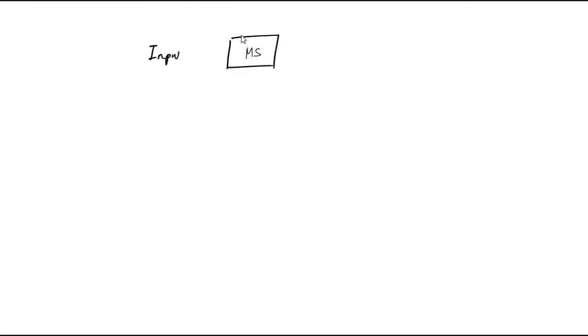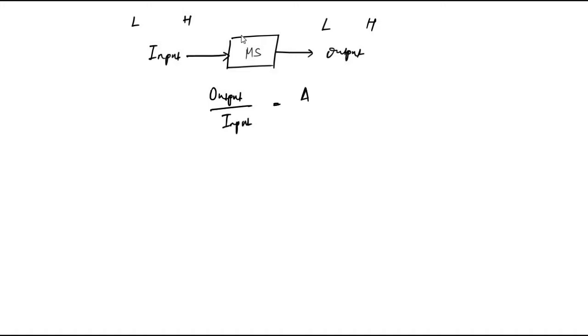So far we have discussed a lot of things related to the input-output relationship for a measurement system. We have a measurement system where we give an input to it and get an output. The output is specified between a low and high range, the input is specified between a low and high range. The output-by-input ratio gives us sensitivity, and from that we determine the calibration curve.